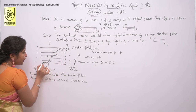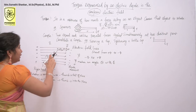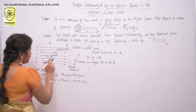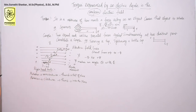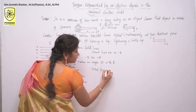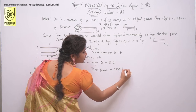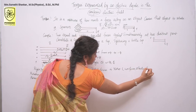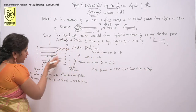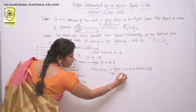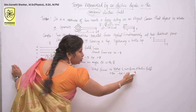These two forces will constitute a couple. One important point: this field is a uniform electric field. Then what about the total force? The total force or net force is zero, because we are taking a uniform electric field. Here I have plus QE force and here I have minus QE force, so the total force is zero.